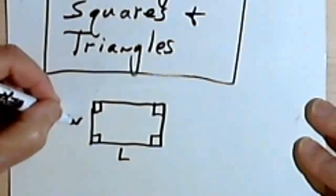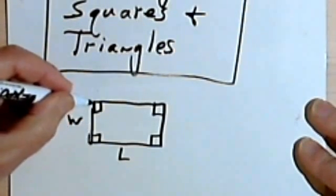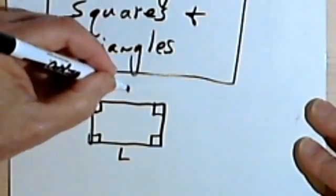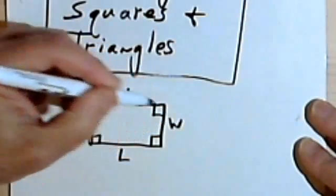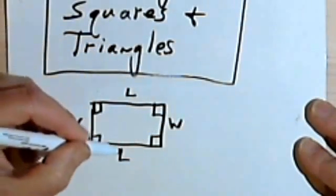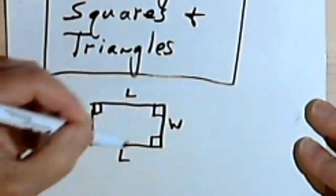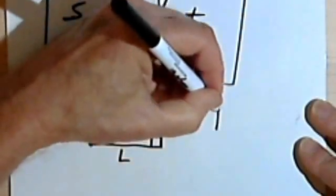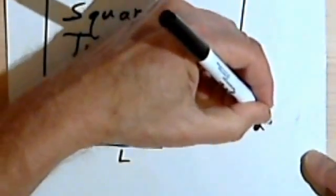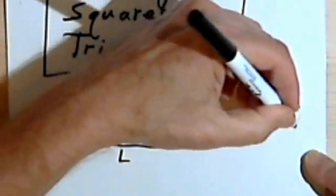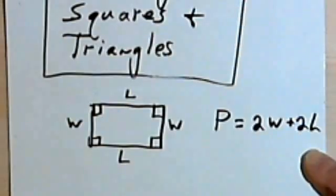We're doing one of the widths — let's say we start here, go over to here, then we do a length, then we do another width, and then we come back and do another length. So we've got two widths and two lengths, so the perimeter is going to be 2w plus 2l.